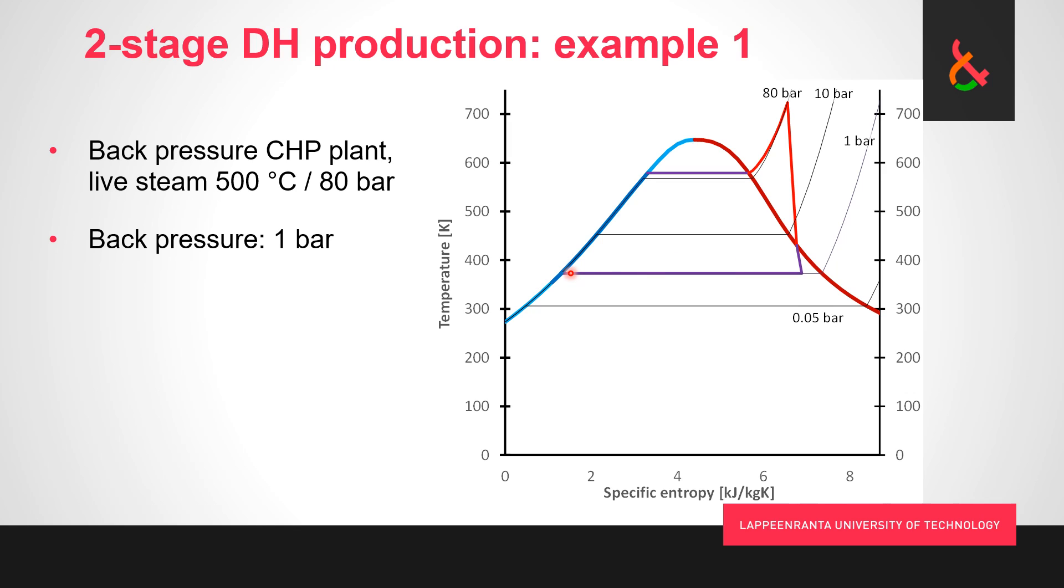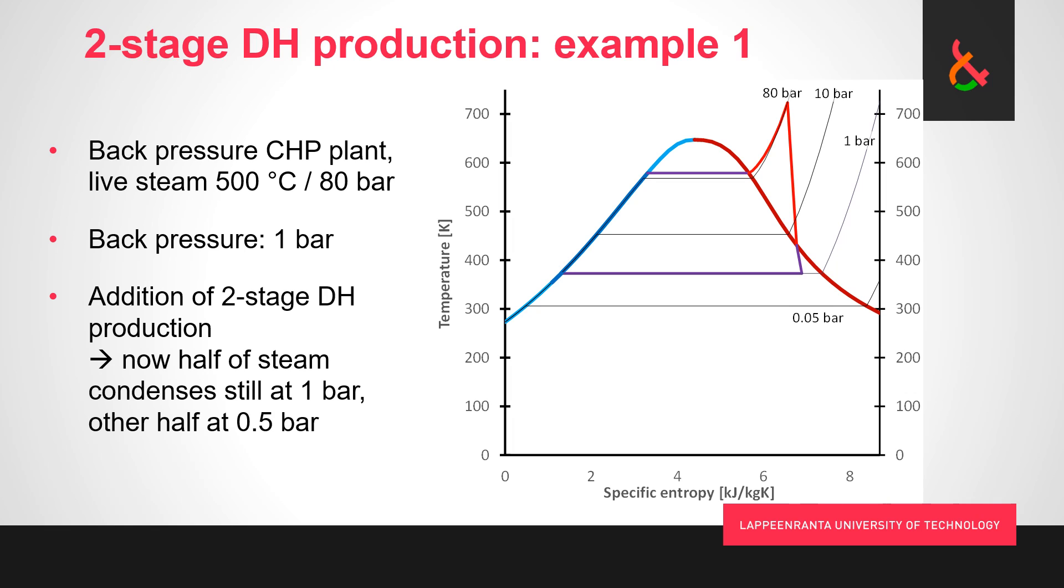This would be how it works with one bar back pressure. We can see our power generation efficiency is going to be quite noticeably less than if we had a vacuum condenser at 0.05 bars for example.